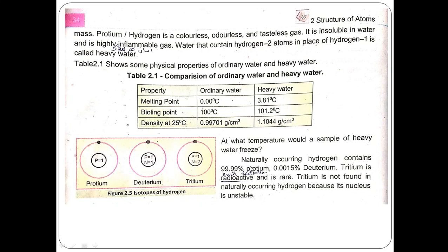In naturally occurring hydrogen: protium makes up 99.9%, deuterium is 0.0015%, while tritium is radioactive and rare. Tritium is not found in naturally occurring hydrogen because its nucleus is unstable.